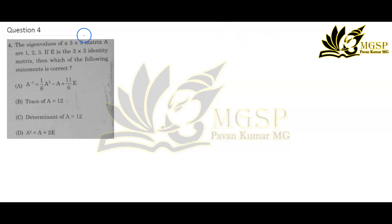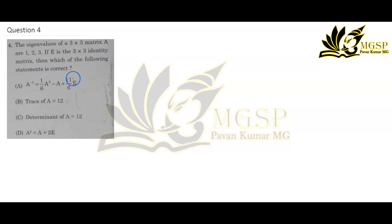The given question is: the eigenvalues of a 3×3 matrix A are 1, 2, 3. If E is the 3×3 identity matrix, then which of the following statements is correct?